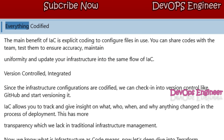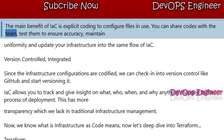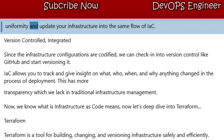Everything Codified: The main benefit of IAC is explicit coding to configure files in use. You can share code with the team, test them to ensure accuracy, maintain uniformity, and update your infrastructure into the same flow of IAC.